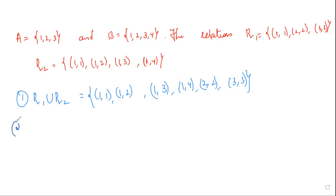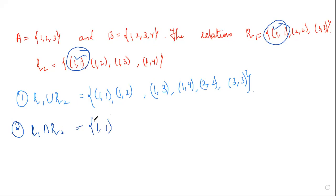The next operation is R1 intersection R2. We look for common ordered pairs. (1,1) is present in both R1 and R2. (2,2) is in R1 but not R2. (3,3) is also in R1 but not R2. (1,2), (1,3), and (1,4) are in R2 but not R1. So the only common ordered pair is (1,1). Therefore, R1 intersection R2 = {(1,1)}.